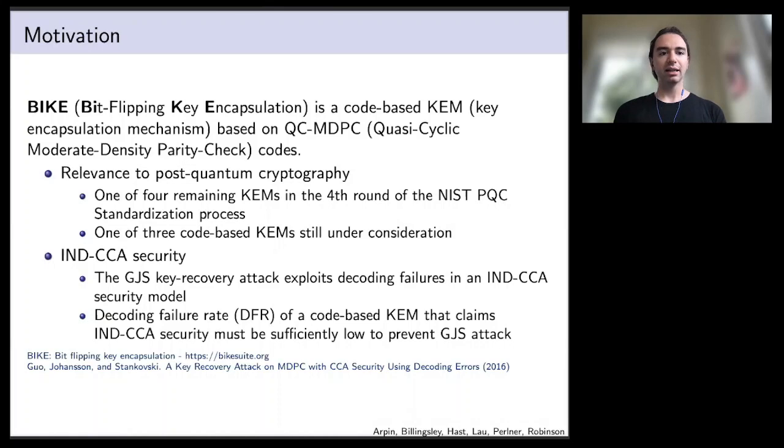To begin, the cryptosystem that we're studying is called BIKE, Bitflipping Key Encapsulation. It is a code-based key encapsulation mechanism based on quasi-cyclic moderate density parity check codes. The relevance to post-quantum cryptography is that it's one of the four remaining key encapsulation mechanisms in the fourth round of NIST's post-quantum crypto standardization process. Three of these are code-based. The only one that's been accepted so far at the end of the third round is lattice-based.